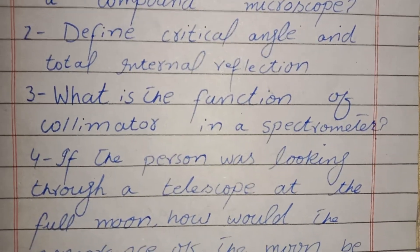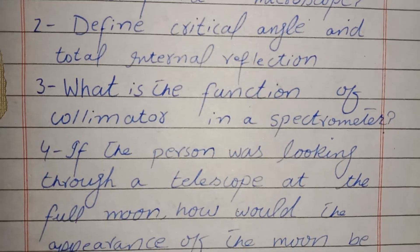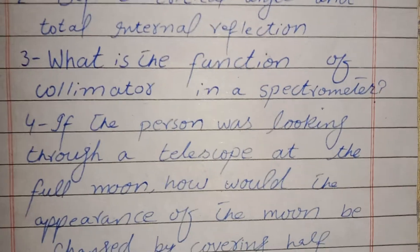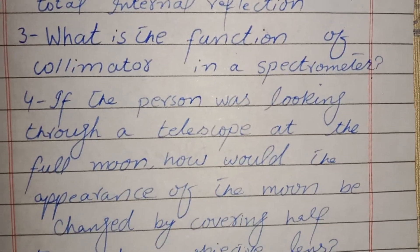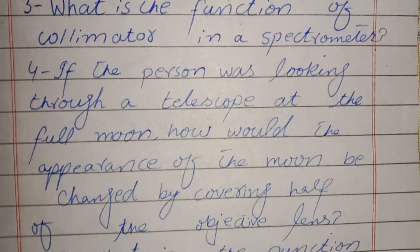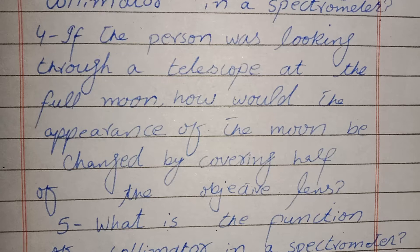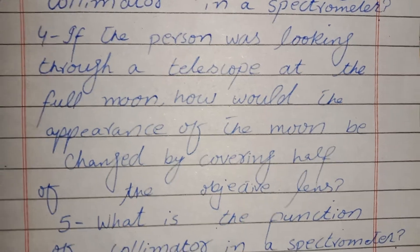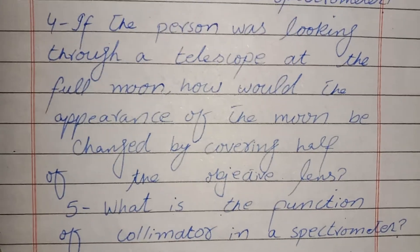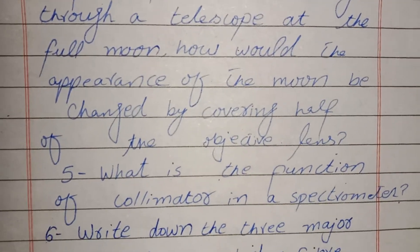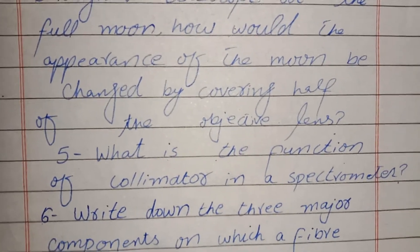If a person was looking through a telescope at the full moon, how would the appearance of the moon be changed by covering half of the objective lens? Also, what is the function of the collimator in a spectrometer?